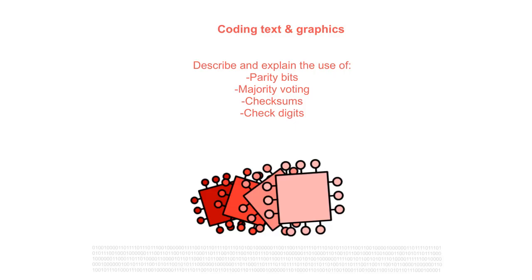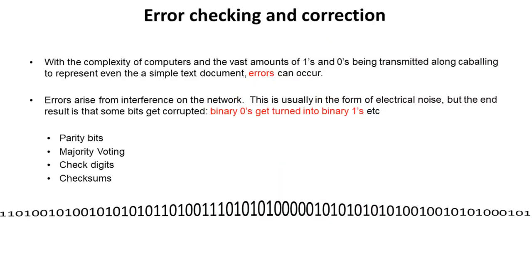In this video we're going to look at various error checking mechanisms, in particular parity bits, majority voting, checksums and check digits. With the complexity of computers and the vast amount of ones and zeros being transmitted along cabling and through the air to represent even simple text documents, errors occur. Errors arise for a large number of reasons on a network including electrical storms and interference, usually in the form of electrical noise, but the end result is the same: binary zeros and ones get corrupted.